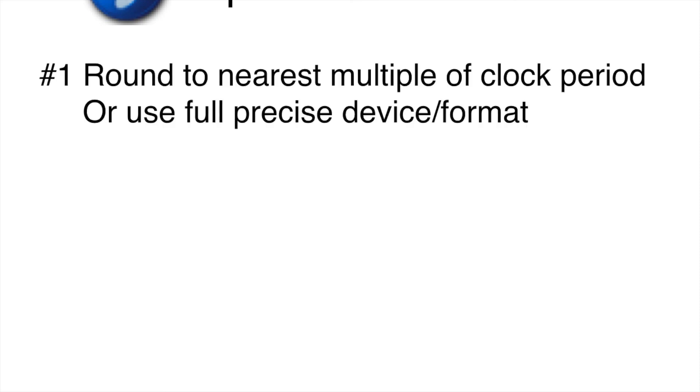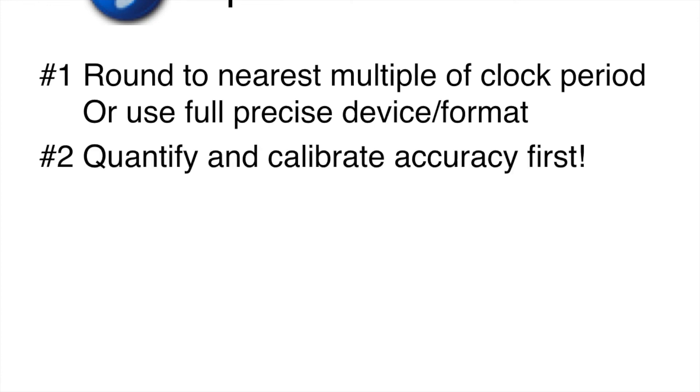Likewise, the tips that we found along the way. First, always round to the nearest multiple of the clock period of the device that you're using, or use a device or a format that conveys the full precision. Second, do quantify and calibrate the accuracy of the devices that you're using first, so that you can be sure of the error bounds before you actually take a measurement.